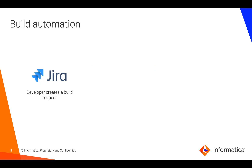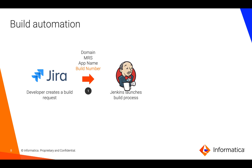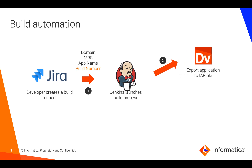As part of this process, once the request is created from Jira, certain attributes are passed through the Jira ticket such as domain name, MRS, application name, and a build number or internal reference number that customers use to track these builds. These inputs are passed to the Jenkins system, which will make a call to Informatica services to export the application to an IAR file and then push it to a version control system such as Git. This completes the build process.